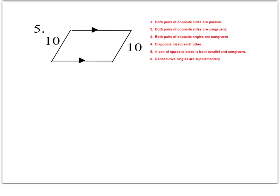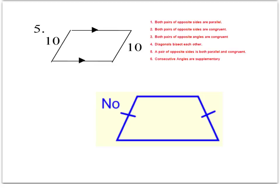Number five looks similar to number three, but this time one set of opposite sides is parallel and a separate set of opposite sides is congruent. This does not meet the test that requires one pair to be both parallel and congruent simultaneously. You can pause the video and try to find a counterexample. My answer is a trapezoid — where one set of opposite sides is congruent and the other set is parallel, meeting the given criteria, but clearly not a parallelogram. Whenever you have a no answer, you must draw a picture for your counterexample.